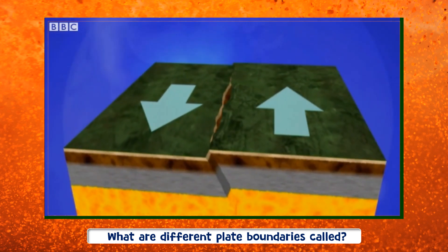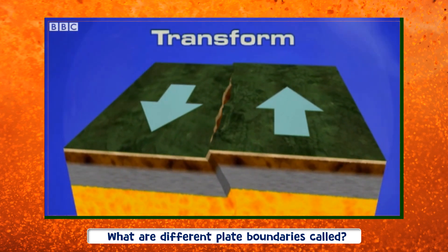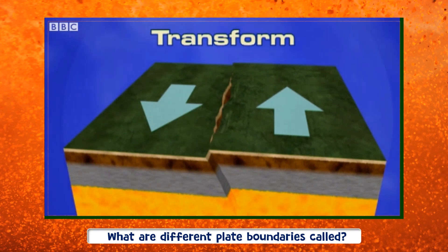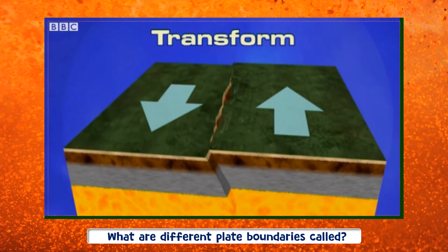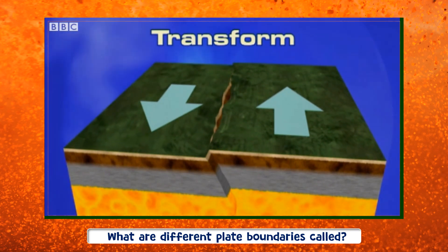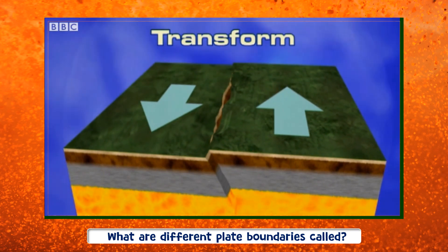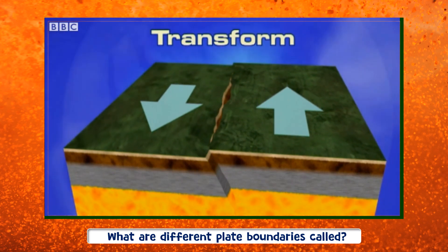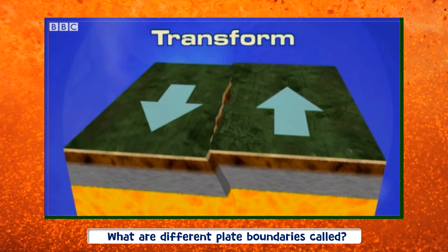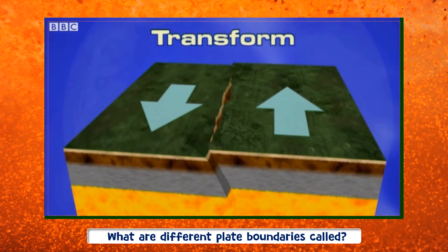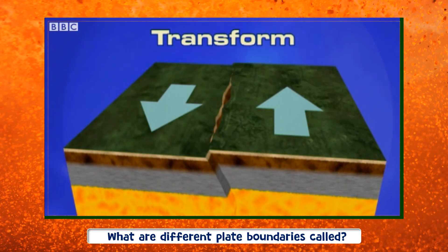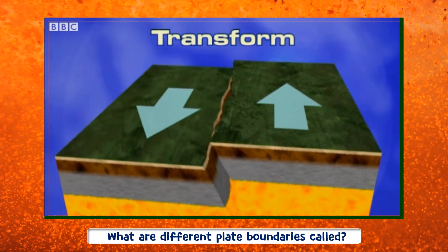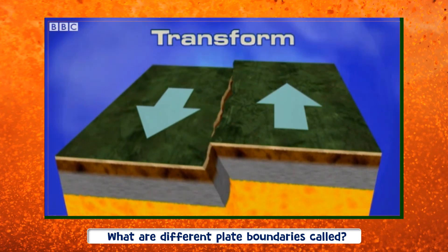At transformed plate boundaries, the plates scrape past each other in opposite directions. When the pressures continue to build, it creates high levels of friction. This stops the plates from moving until the pressures overpower the friction and, with a sudden snap, the plates jerk past each other.